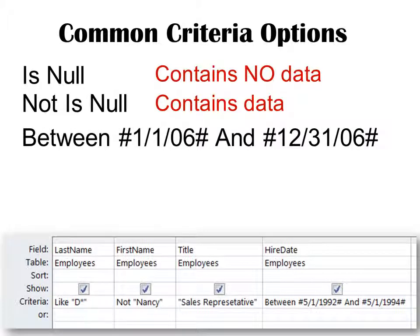Whenever you want to look between two dates, you use the Between operator — notice the hashtags. The good thing about Access is it will automatically put those hashtags around dates as soon as you type them. Between always works with And: Between [date1] And [date2] — that finds anything, for example, in 2006.